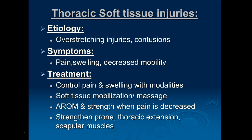Moving down to the thoracic spine — we can have soft tissue injuries that affect it, usually trauma or fall related. We might overstretch the muscles or have a contusion from falling or getting hit in the thoracic spine. Symptoms are pain, swelling, and decreased mobility. Once pain has decreased, begin active range of motion. Strengthen those muscles with lots of thoracic extension, restore rotation of the spine, and focus on scapular muscles such as mid-trap, lower trap, and rhomboids, which will all need strengthening.